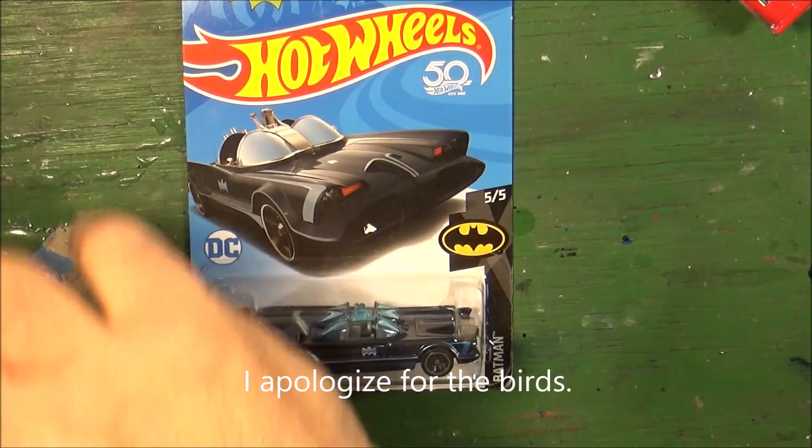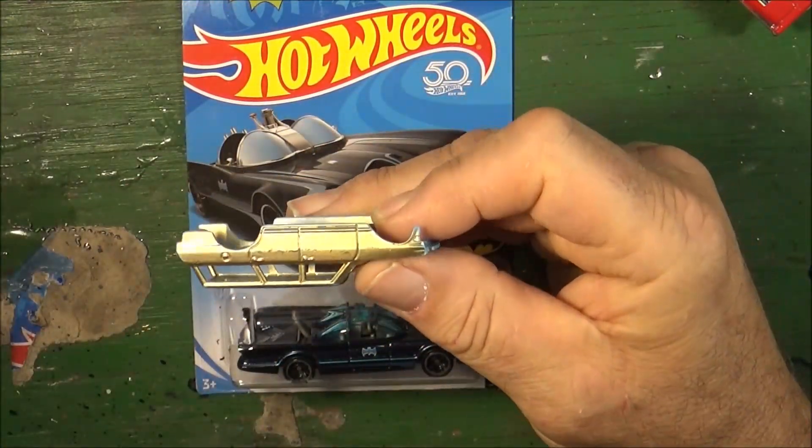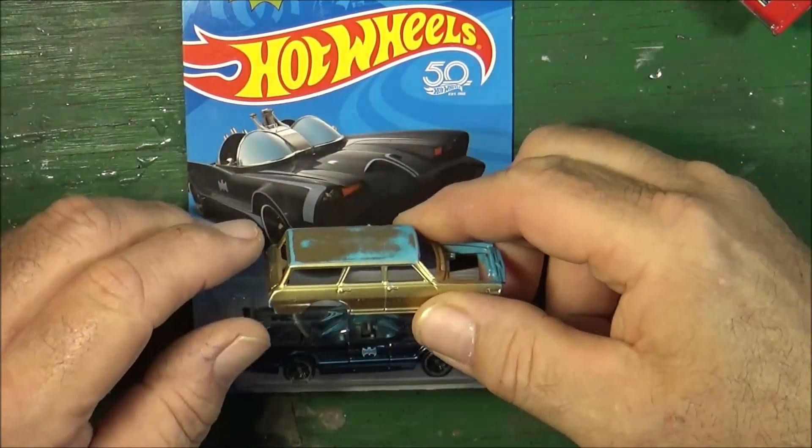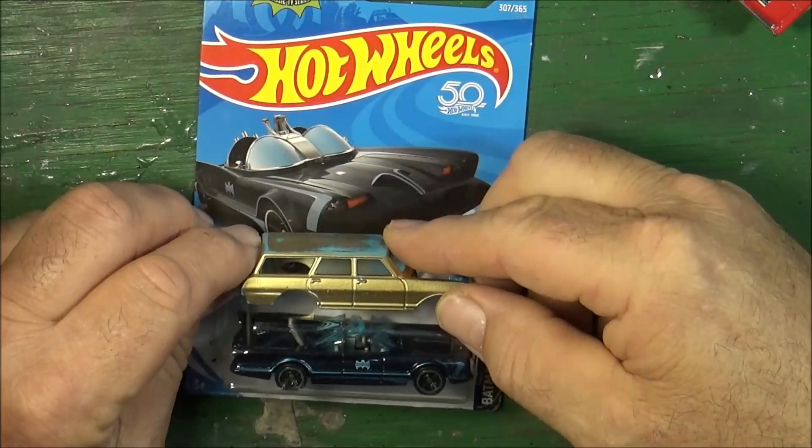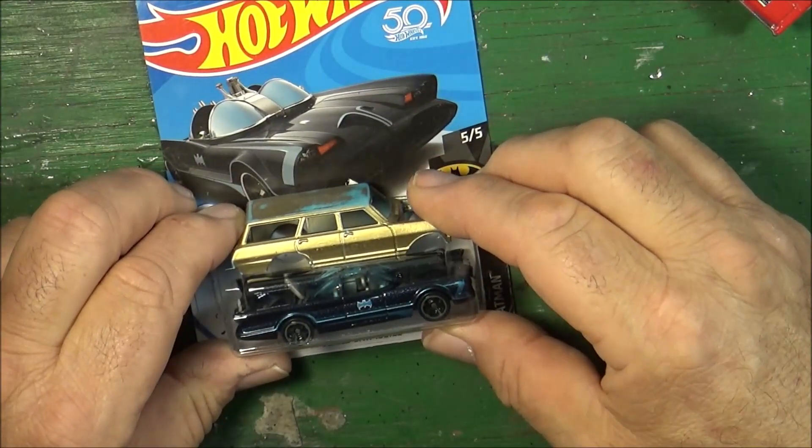I think what we're going to do is use the body from a Chevy Nova wagon gasser. I'm going to remove the top and the tailgate and JV-weld it to the Batmobile and make a hearse out of it.